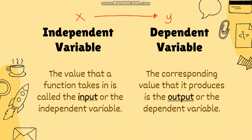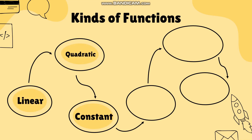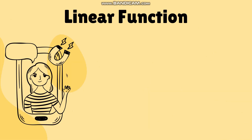There are six kinds of functions: linear, quadratic, constant, identity, absolute value, and piecewise. We will discuss them one by one and I will also give examples. Let's start with the linear function.